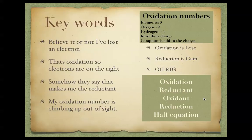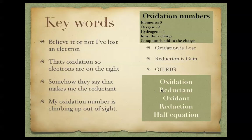Key words include Oxidation, Reductant, Oxidant, Reduction, and Half Equation. Oxidation involves the loss of electrons, so electrons appear on the right-hand side of the equation. The thing that becomes oxidised is called the Reductant — which can be confusing because it sounds like the opposite. Where Reduction occurs, we have the Oxidant. We can represent reactions using half equations showing the oxidation half and the reduction half.